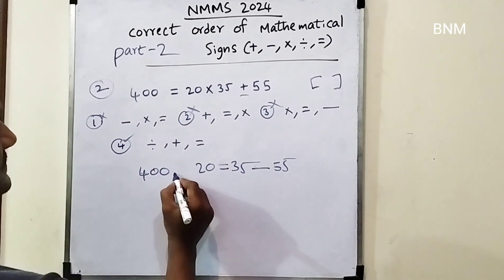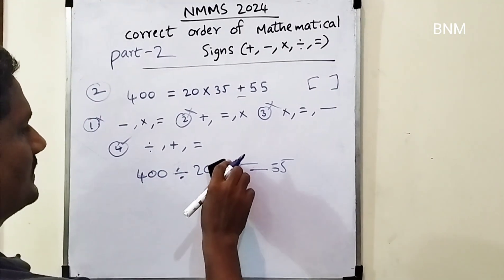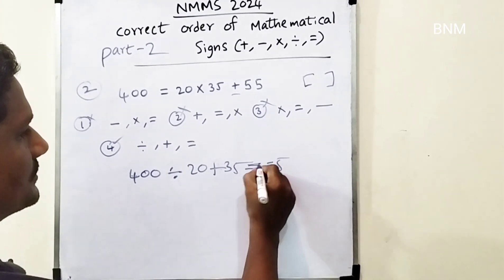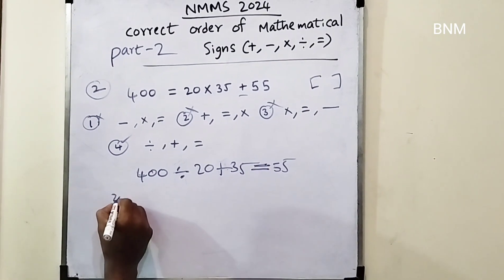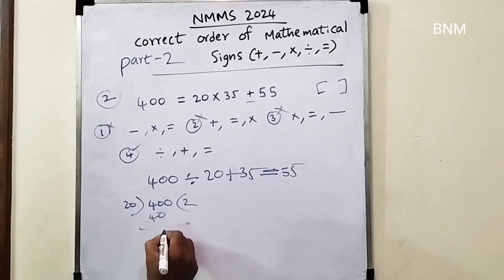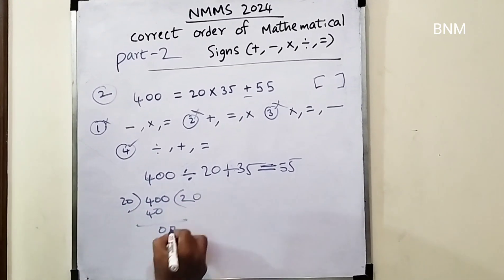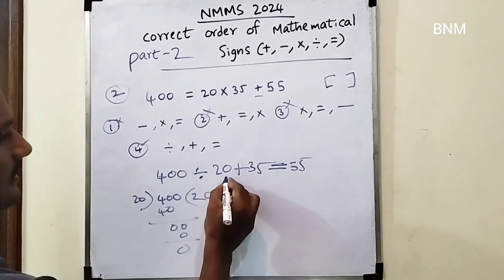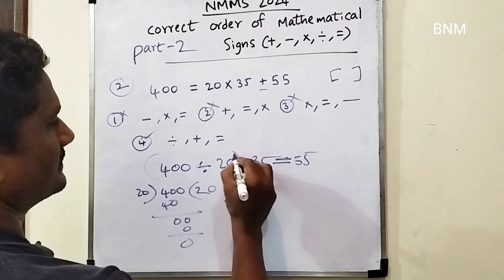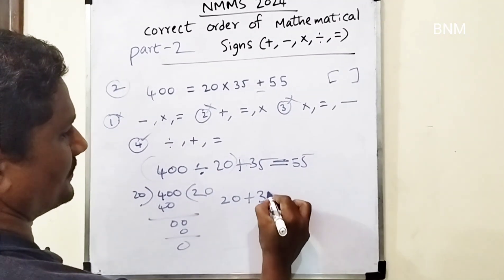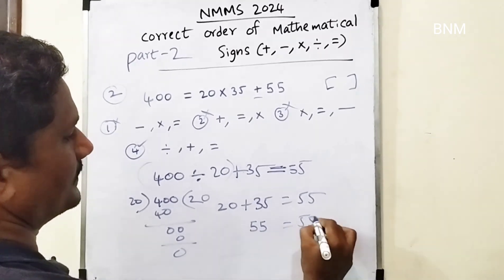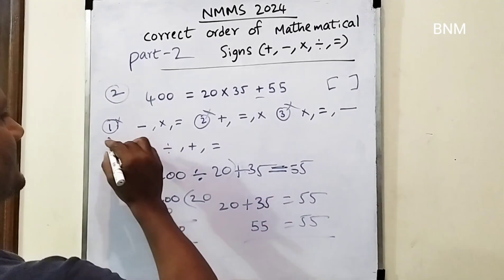First two: division, then plus, then equal, then last one is equal. Division: 4 times 2 are 40. 20 is 0. Division is the first step. 20 plus 35 is equal to 55. If we add, we get 55. So we should make two equal lines — that is the correct answer.